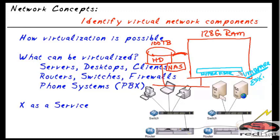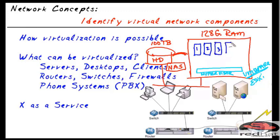The hypervisor knows about the network interface cards, memory, and storage, but it's not useful until we add guests — virtual machines. So where before we had eight separate servers, now we can add server one, server two, server three, all the way through eight, all inside one physical box.